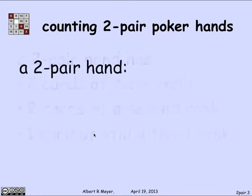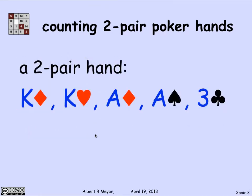Here's a typical two-pair hand. I've got two kings — they both have rank 13. One is a king of diamonds, the other is a king of hearts. There are four suits: diamonds, hearts, spades, clubs. There are two aces — a pair of aces — one is an ace of diamonds, the other is an ace of spades. And finally there's a third rank that doesn't match the kings or the aces, namely a three of clubs.